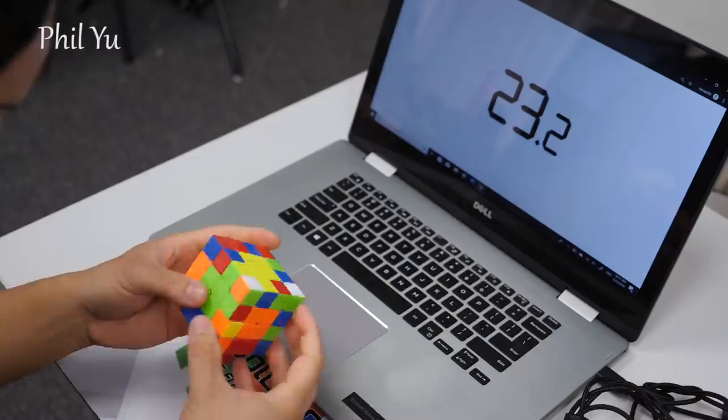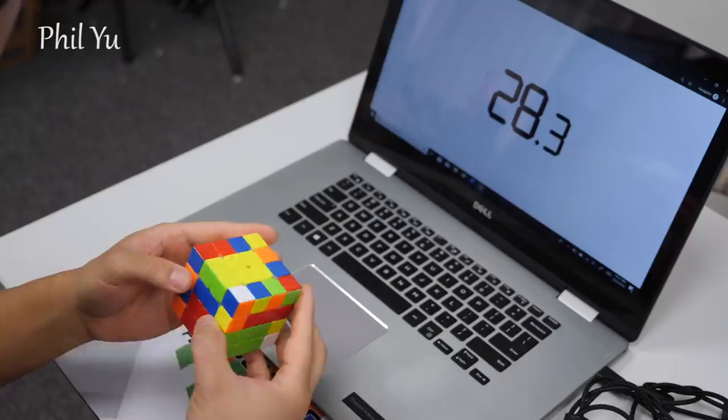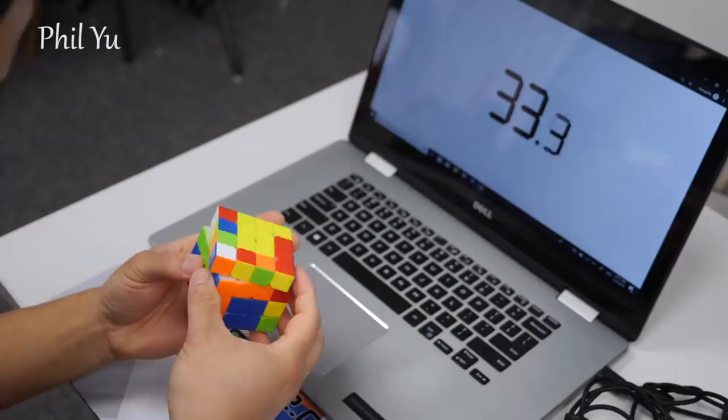Hey everyone, this is Phil. The Valk 4 is a nice compact puzzle that fits well in the hand and turns pretty easy. To start off, I don't like the standard one very much because of its weak magnets.